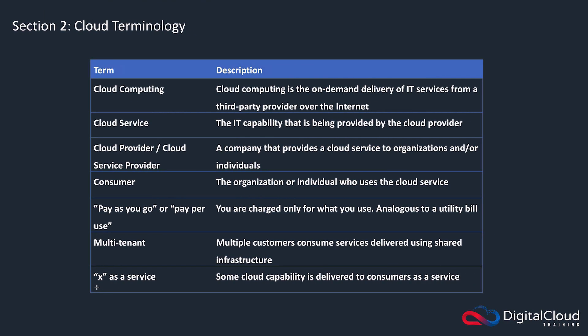The final term I want to cover is 'as a service.' The X in XaaS can be replaced by a letter corresponding to the type of service being provided. For instance, it could be software — then we'd call it software as a service — or backup capability, then it's backup as a service. This is the service model and the way the service is delivered to you as a consumer. Later in this section we'll cover service models in much more detail, including the three most common service models in the cloud world.